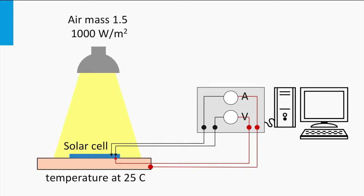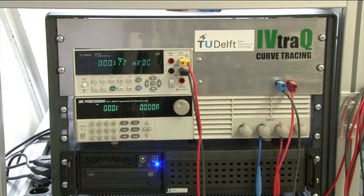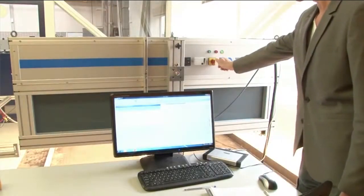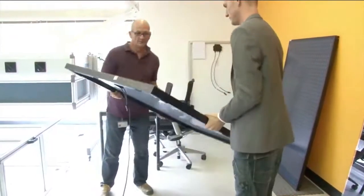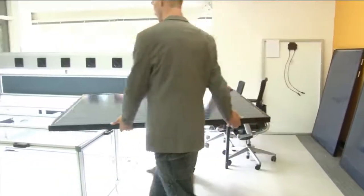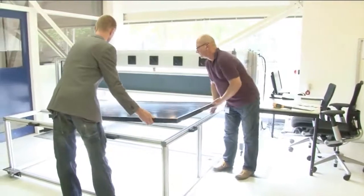Let's see how such a measurement in reality works. For that we will go to the Delft Solar Lab. Here you see the voltage supply and the ampere meter. Typical panel areas are in the range of 1.5 square meters, which means that you need a light source with a spectrum shape and irradiance homogenously distributed over large areas. In the Solar Lab we use a large AAA solar simulator from Eternal Sun.